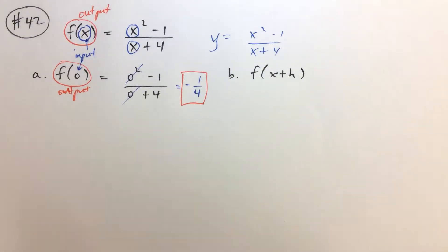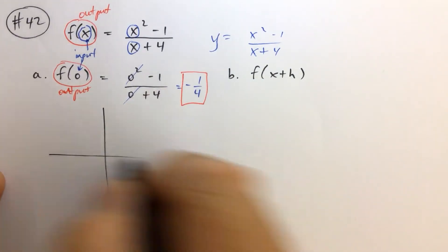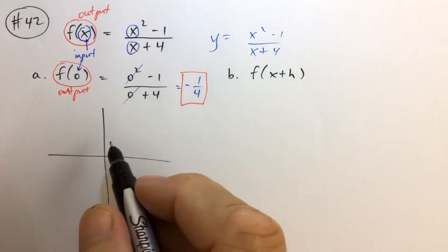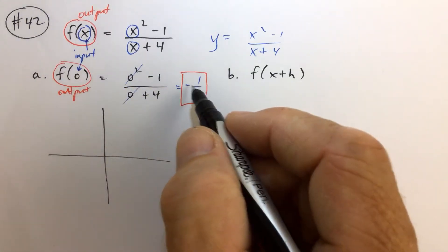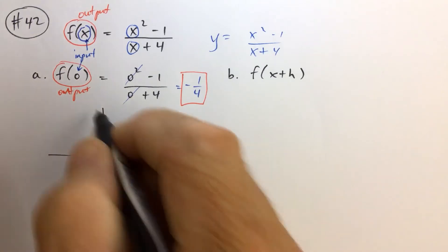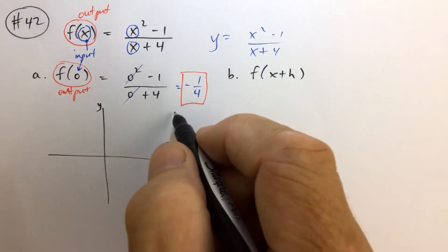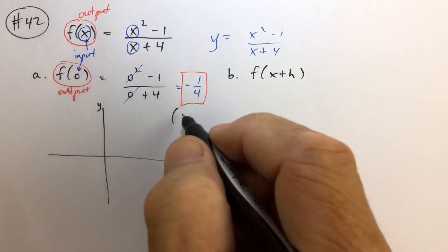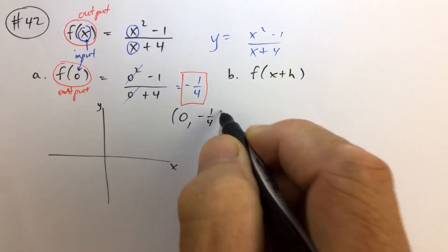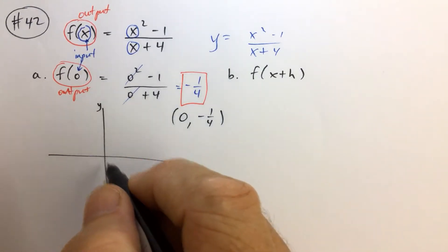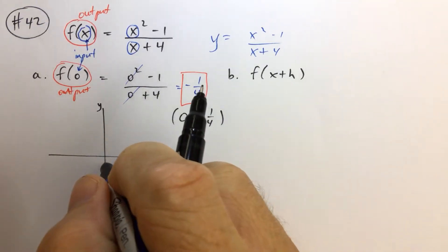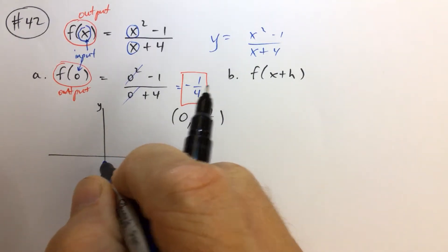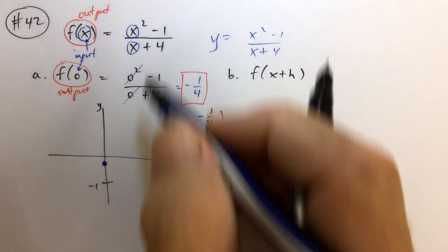And if that's the case, take it a step further. Taking it a step further, if x being 0 is the input and y being negative 1 fourth is the output, then we can actually plot that point. That's an ordered pair. When x is 0, y is negative 1 fourth. So that's an ordered pair. In fact, that ordered pair, if this is negative 1, then the ordered pair 0, negative 1 fourth is a point on the graph of that function.